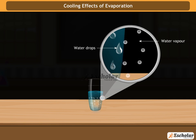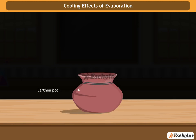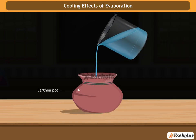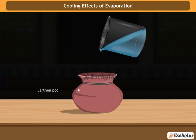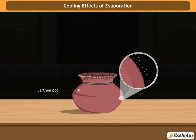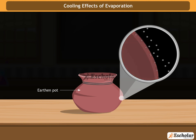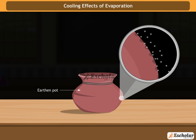Let us take another example from our daily life. The cooling effect caused by evaporation can be easily observed in an earthen pot, which has minute pores throughout its surface. Water keeps coming out of these pores and absorbs heat from the pot as it evaporates. This is how the water present inside the pot remains cool.